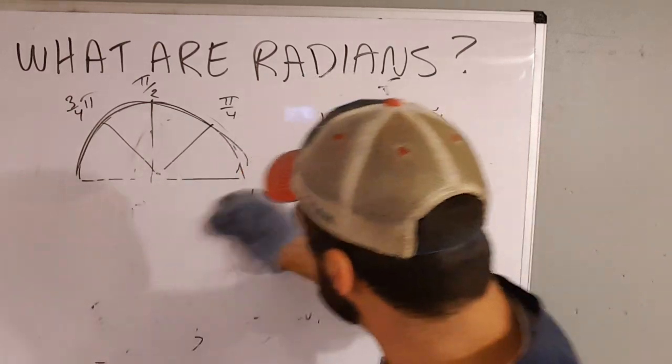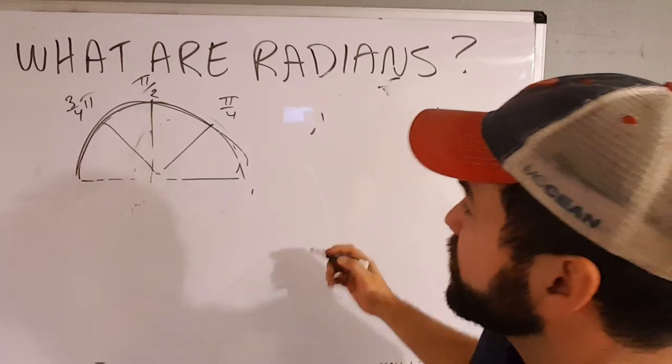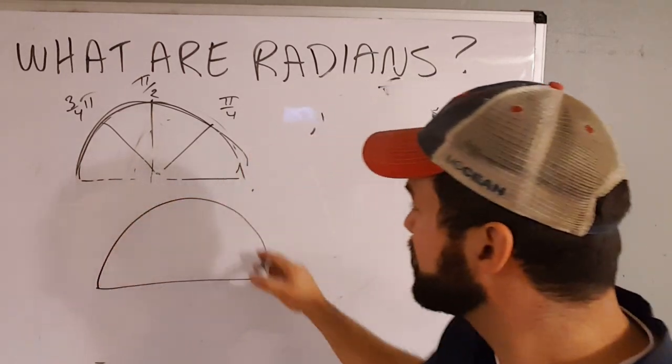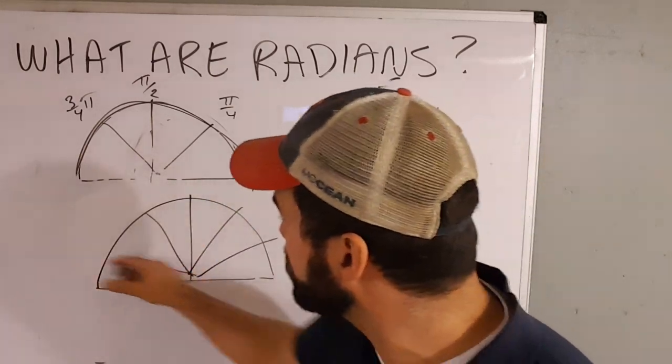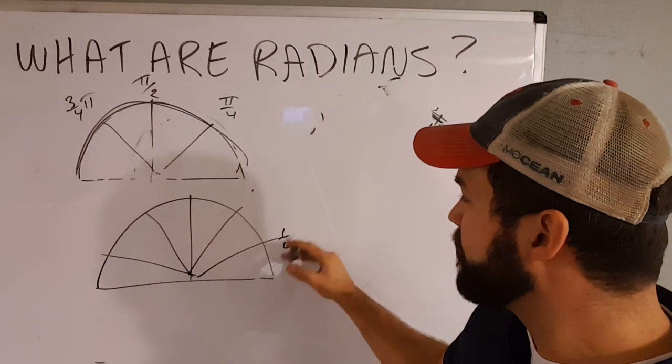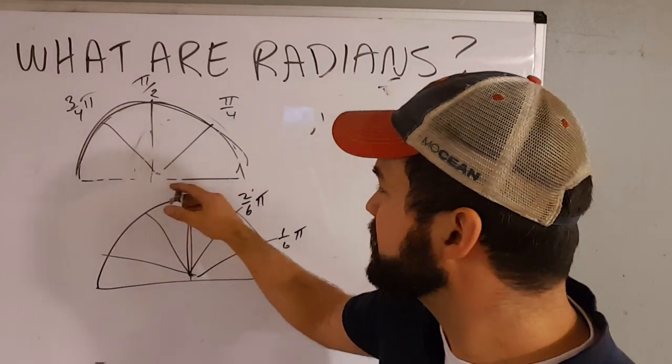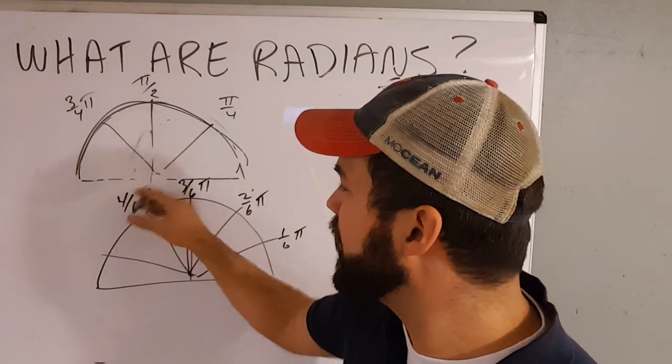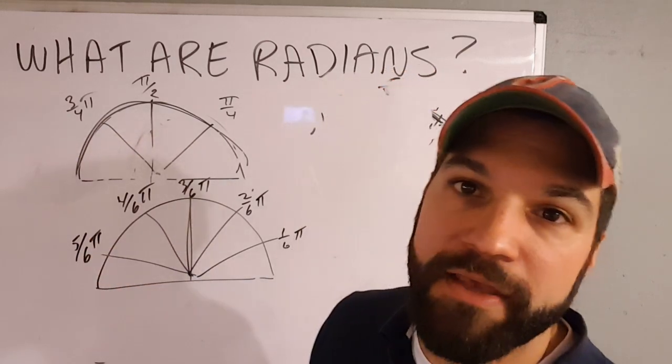The only way you're going to see these things broken up is the other way they break a half circle up with radians. They'll say, we could also break it up into sixths. So they split it down. One sixth of a pi, two sixths of a pi, three sixths of a pi, four sixths of a pi, five sixths of a pi. That's the other way you'll see it.